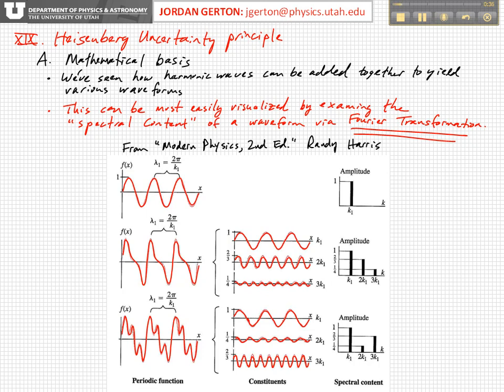So in the previous lecture, we saw that you can add harmonic waves together to yield various different waveforms. We really just considered two harmonic waves that yielded a waveform consisting of a sinusoidal function modulated with an envelope, producing beats.